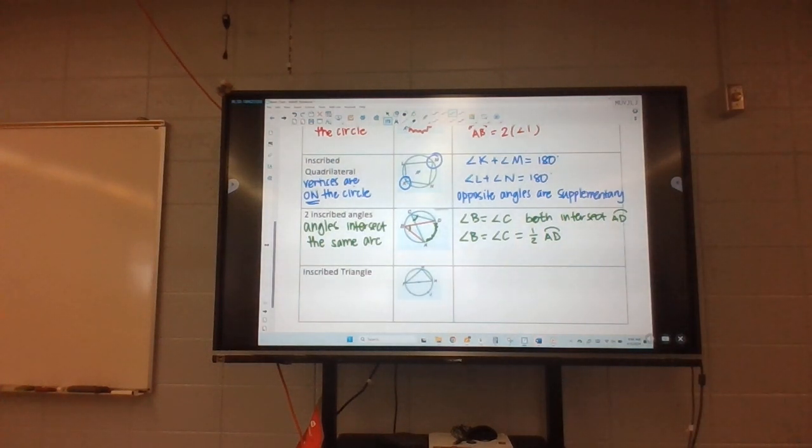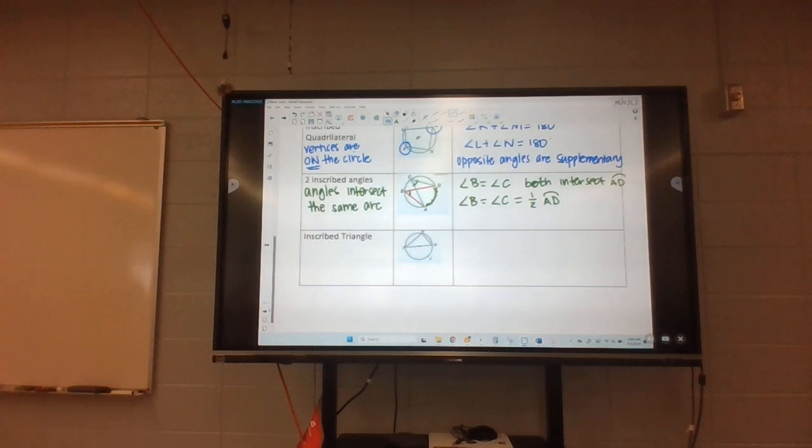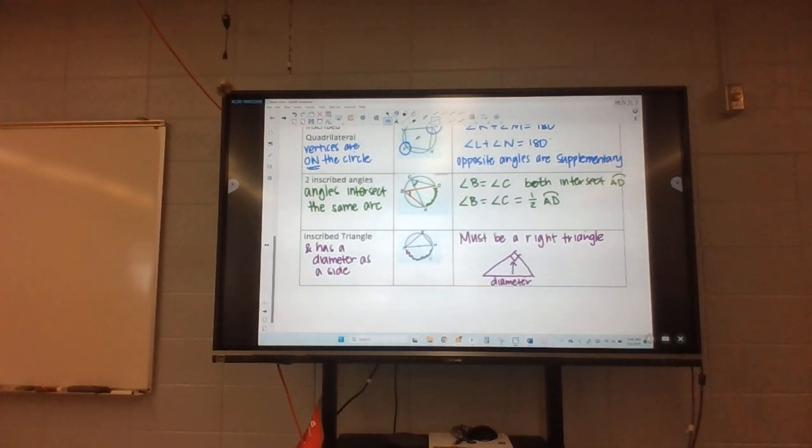And then our last one before we take a break here is our inscribed triangle. So again, the vertices are all on the circle, but there's also a diameter. So FH is our diameter there. That means it has to be a right triangle. So since this is the diameter, the angle across from it is going to be a right angle because the diameter makes up 180 degrees of our circle. So that means that angle across from it would have to be 90.